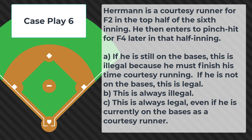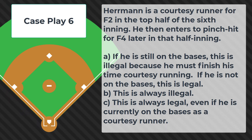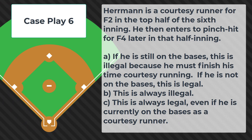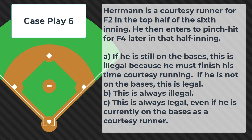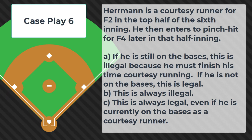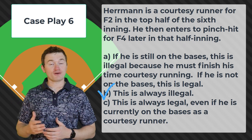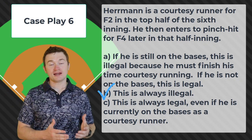Case play number six: Herman is a courtesy runner for F2 in the top half of the sixth inning. He then enters to pinch hit for F4 later in that half inning. Is this: A — legal if he is no longer on the bases but illegal if he is still on the bases, B — always illegal, or C — always legal even if currently on the bases as a courtesy runner? The correct answer is B, always illegal. If they've already been a courtesy runner in that half inning, they cannot be used as a substitute in the same half inning.